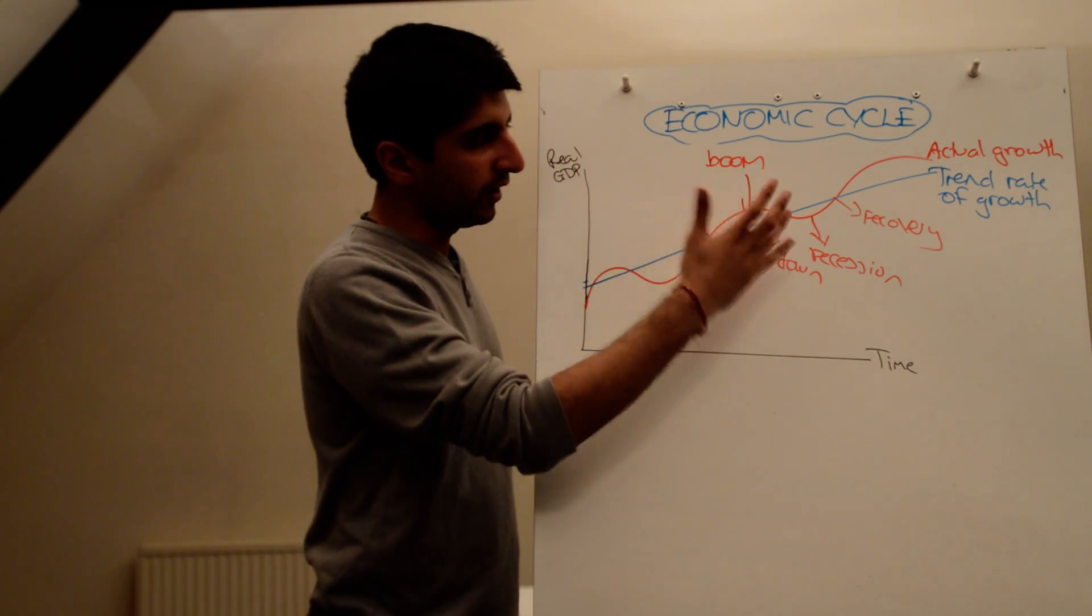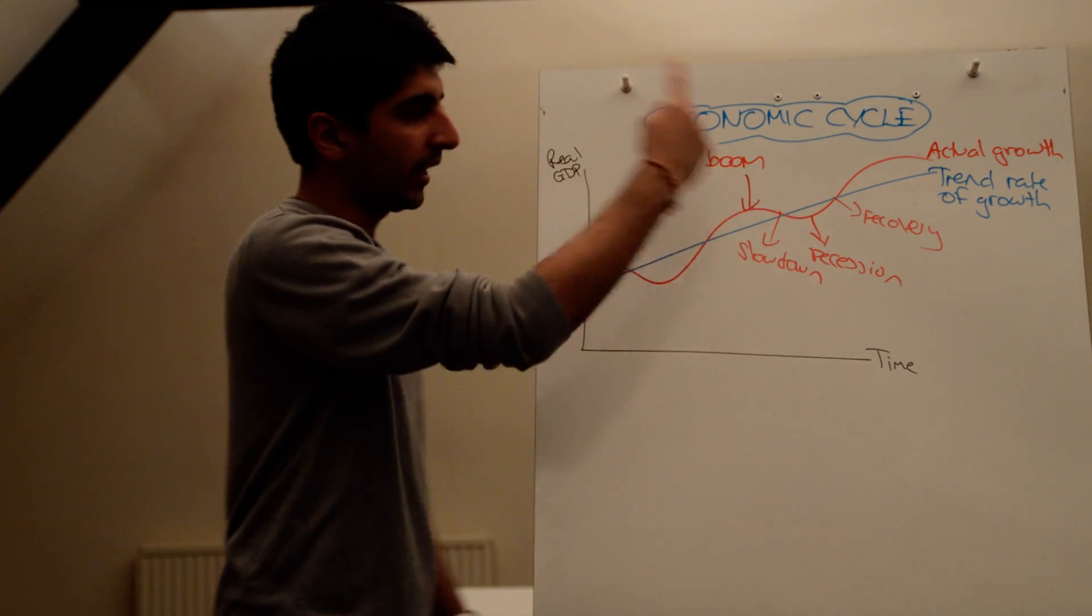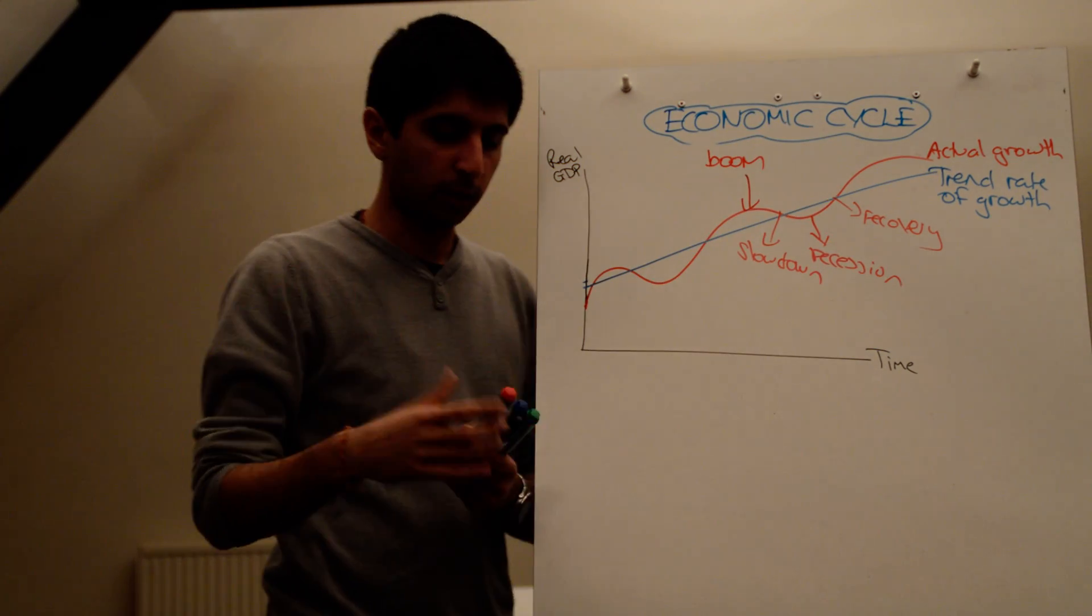Fine. So you need to know those four things. Boom, followed by a slowdown, followed by a recession, followed by a recovery. That's the cycle, the different stages of the economic cycle.